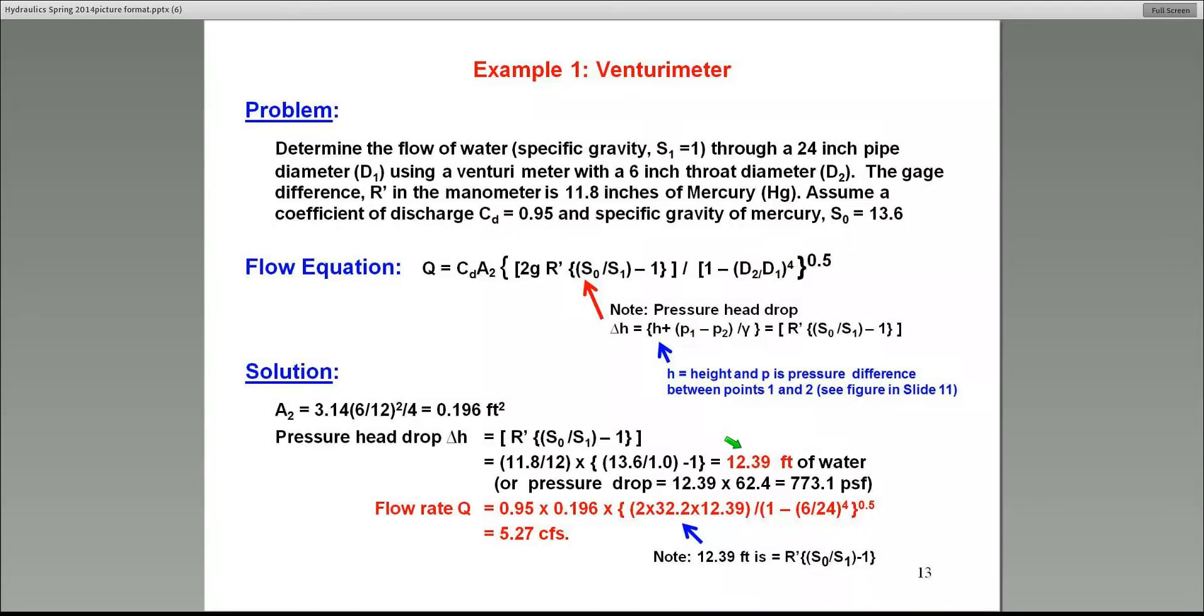Now, here's the equation that I was looking at as an example. In this case, the CD, the coefficient of discharge, is given as 0.95. And therefore, I'm going to use that essentially in the equation here. Also note that the pressure drop that we calculated is about 12.39 feet of water. And therefore, it's substituted in this equation to calculate Q. So the final product is Q, which is CD times the pressure drop. And of course, multiplied by this quantity called, or divided by 1 minus D2 over D1 to the power of 4. So you all can do these calculations. I've just shown it to you in this example. The final flow rate through the pipe is 5.27 CFS.